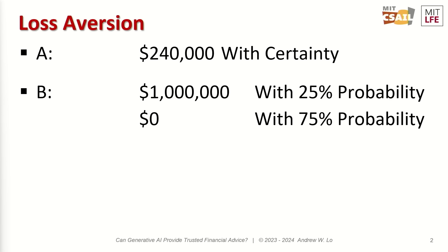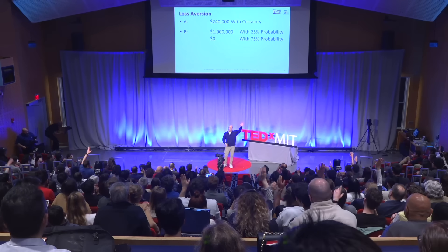This is a quantitative crowd, so I'm going to help you by computing the expected value of B. The expected value is $250,000, but you don't get the expected value — you get either a million or nothing. Higher expected return, but higher risk. So by a show of hands, how many of you would choose A, the sure thing?